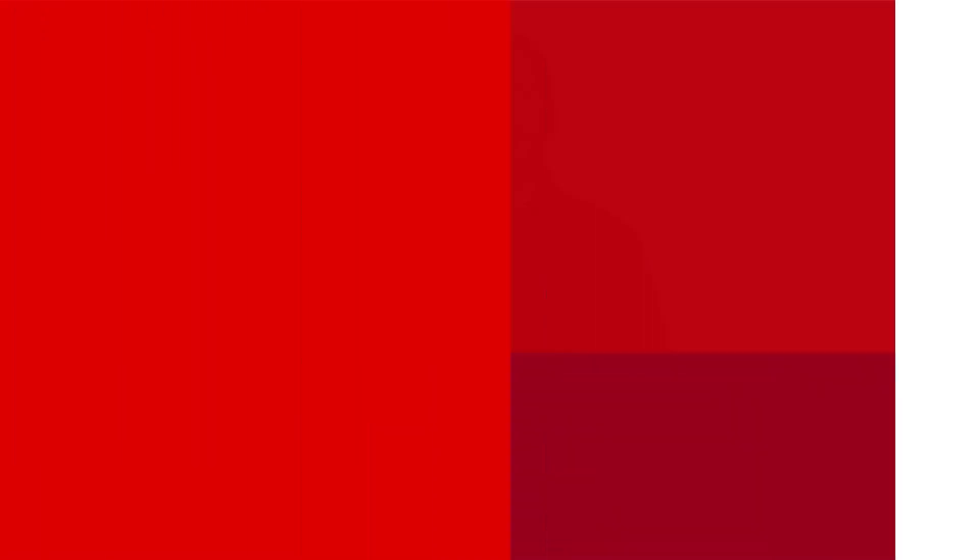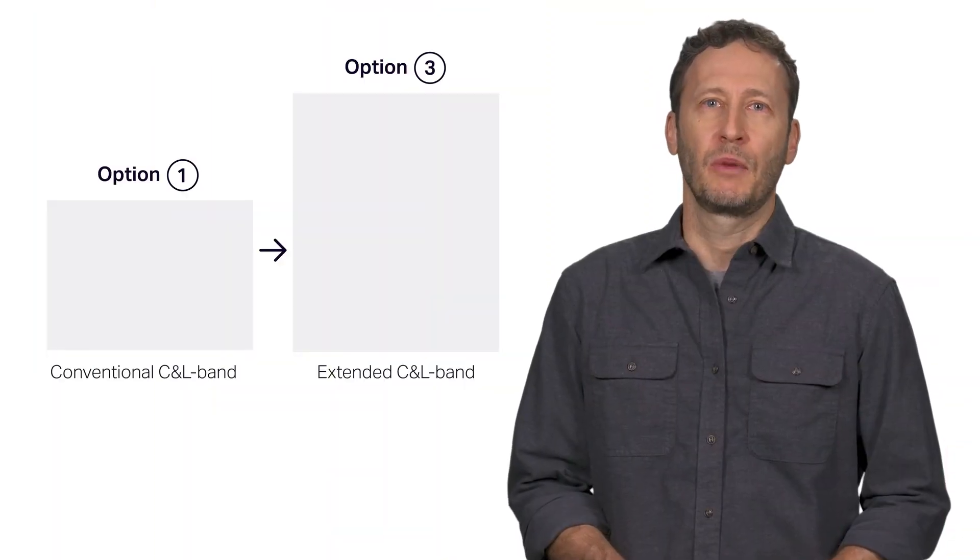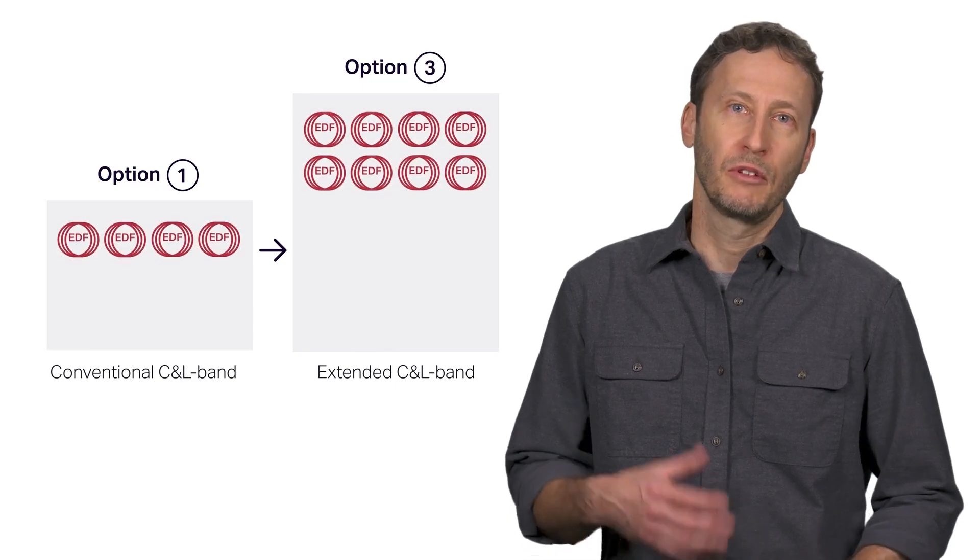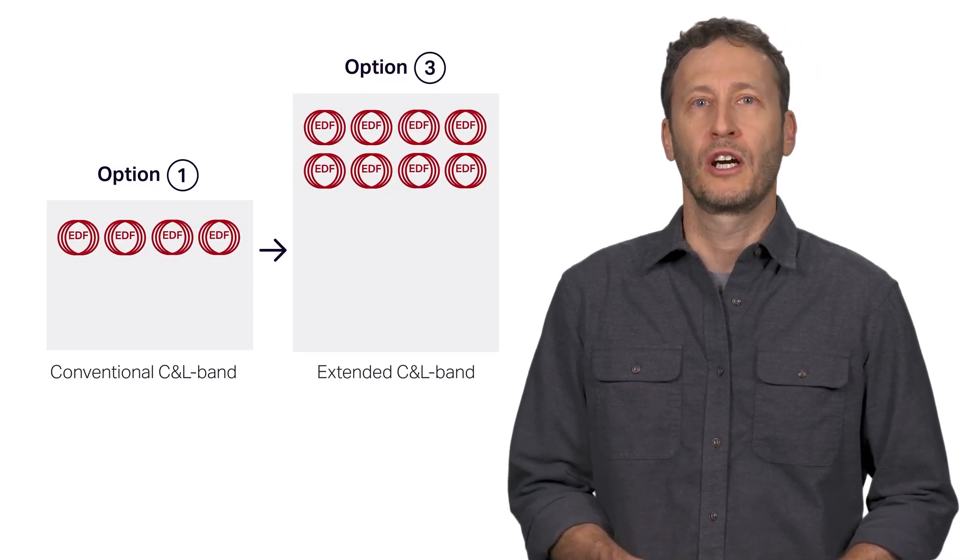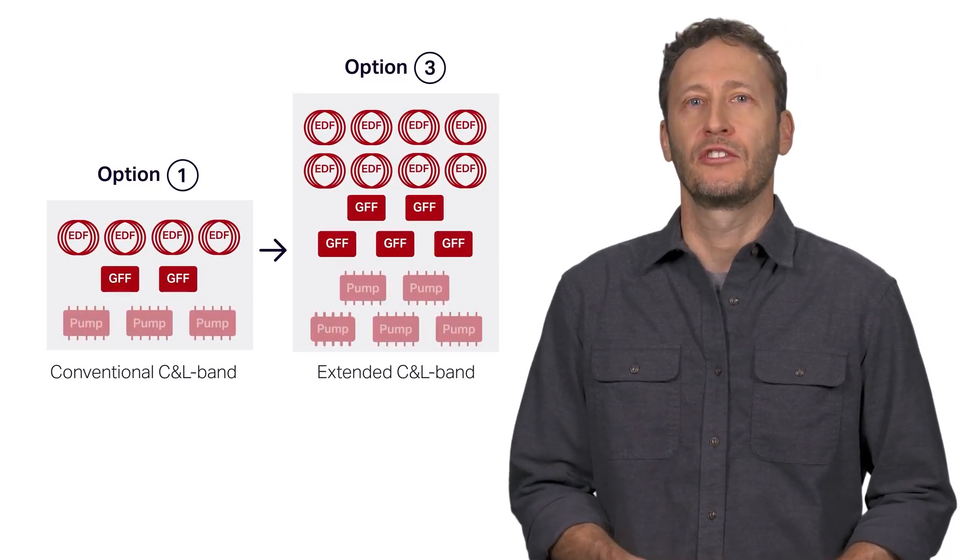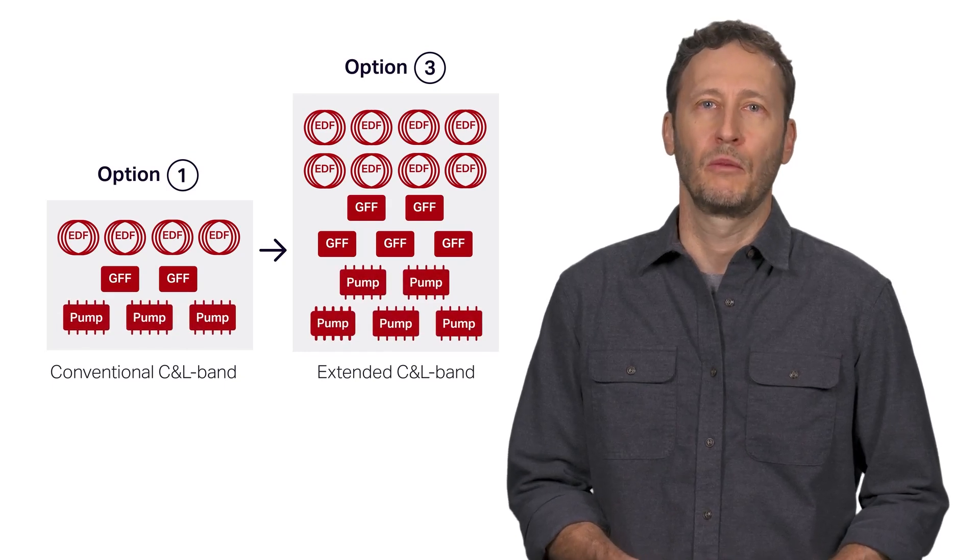While it may be possible to win the battle against physics and overcome the parasitic loss due to excited state absorption, it requires brute force. To achieve an equivalent gain in power spectral density output, the amplifier design requires considerably more erbium-doped fiber, many more gain stages, and up to 3.5 times the total pump power.